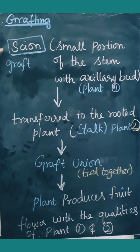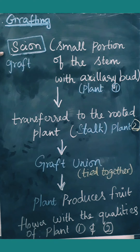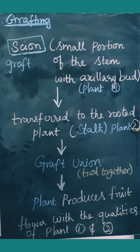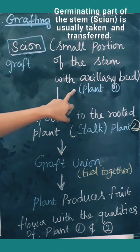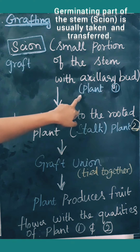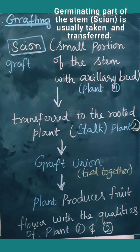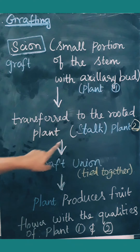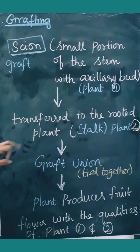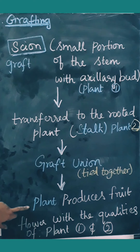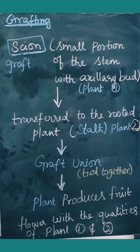Looking at the flowchart for grafting: the scion is the stem part of the plant which we are going to transfer to the other plant — this transferred part is called the graft. A small portion of the stem, preferably with an axillary bud, is taken from plant one (the scion) and transferred to plant two (the stock). Both are tied together using a polythene bag, and desirable environmental conditions, nutrients, and water are provided. After a while, the plant starts producing leaves, fruits, and flowers.